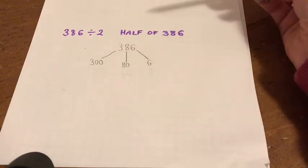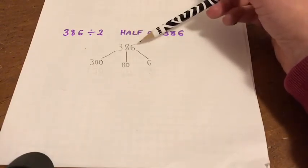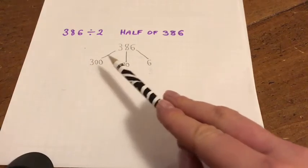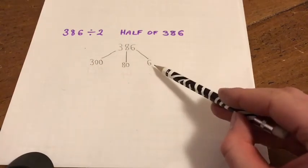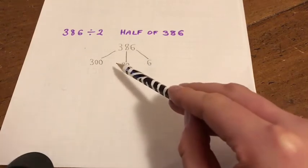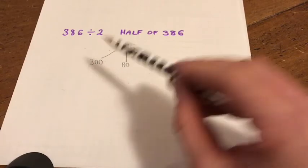Now the difference between this one and the other one is that we have three digits, so we have hundreds, tens, and units. So this time when I've partitioned, I've partitioned into 300, 80, and 6. And it's really important to remember that this is not 8, it is 80, and this is not just 3, it is 300, because that can affect your answer.